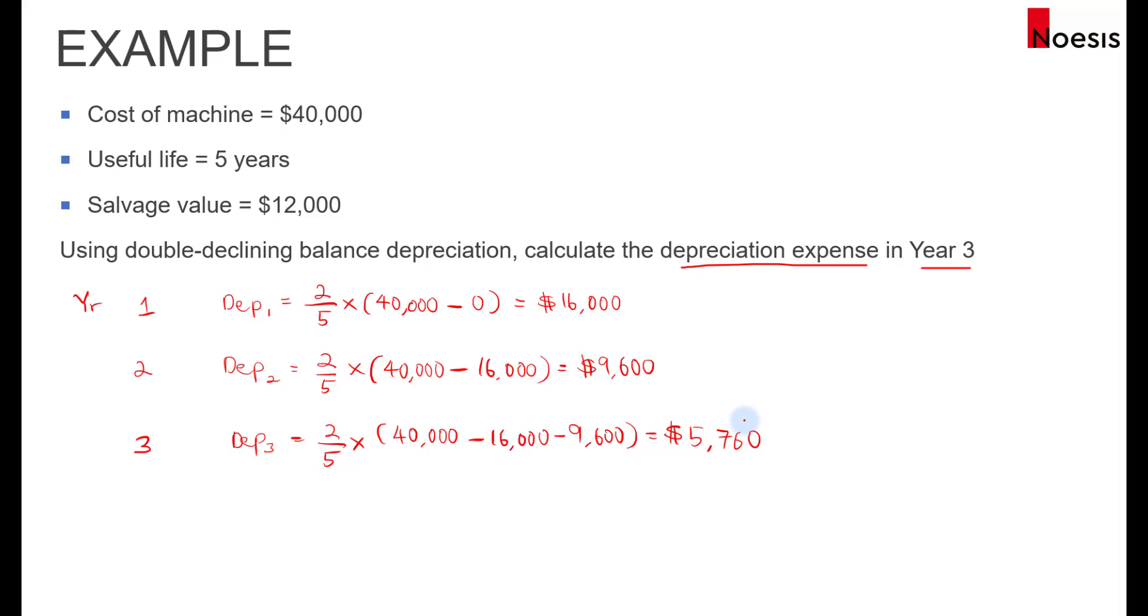If you don't check for the net book value, that's where you could fall into a trap. Because if you notice here that when you take $40,000 minus 16,000 minus 9,600, the net book value of the asset is currently at $14,400. This is the remaining book value. And take note that your salvage value is up to 12,000.